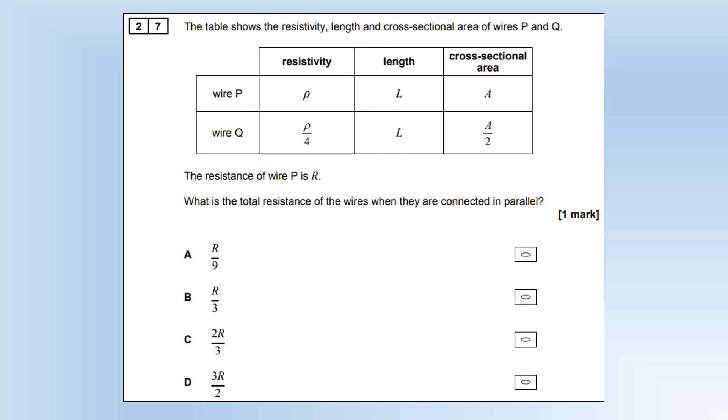The table shows resistivity, length, and cross-sectional area of wires P and Q. The resistance of wire P is R. What's the total resistance of the wires connected in parallel? The resistance of Q is going to be a quarter due to the resistivity, but then double because it's half the area, so it's going to end up with half the resistance. Connecting those two in parallel then gives us one third of the resistance.